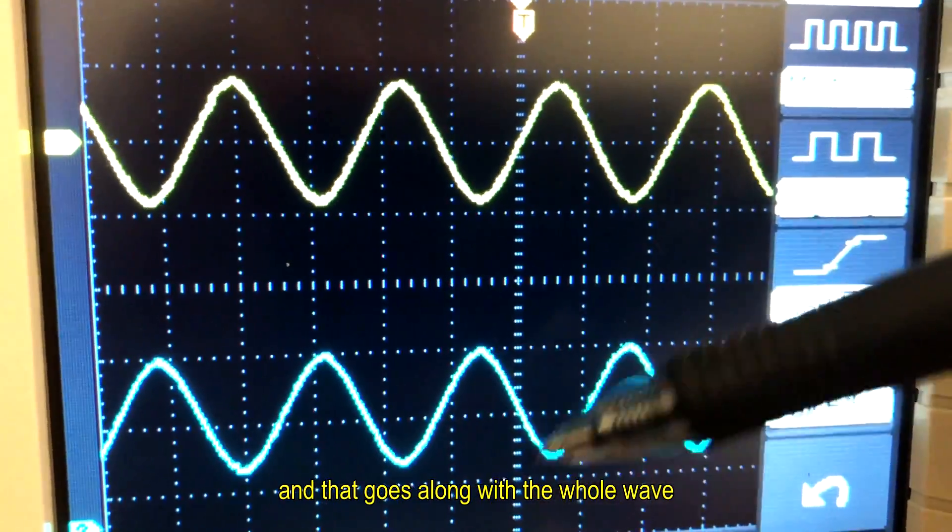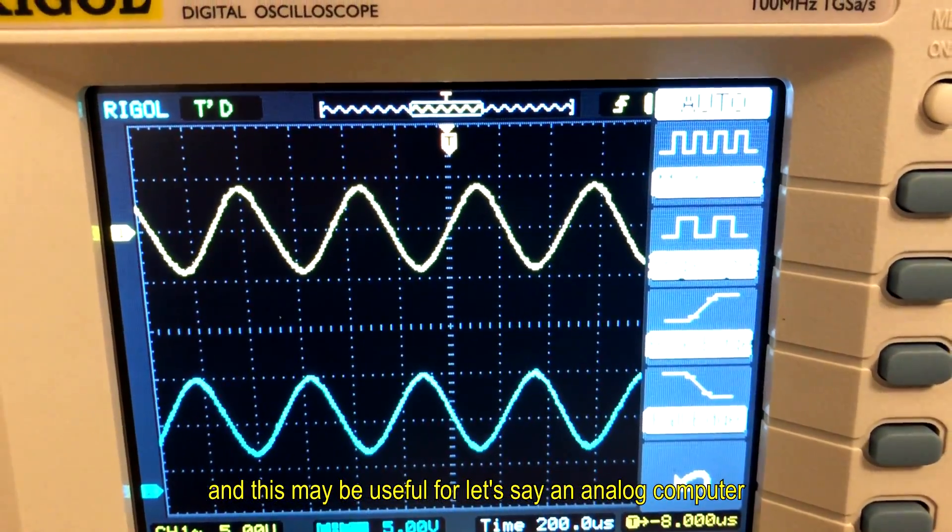You can see how this is inverted because you can see the tip of this signal is the inverse of this one. And this may be useful for an analog computer.